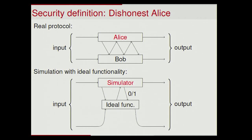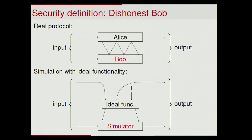Here's what the security definition looks like for a dishonest Alice. In the real protocol, Alice and Bob communicate back and forth, where some of these rounds are actually uses of the classical ideal functionality. We want this to be indistinguishable from the ideal case, where the dishonest Alice is replaced by a simulator that interacts only with the ideal functionality. The ideal functionality first outputs Alice's output and not Bob's, and then Alice can choose whether Bob will get the output or not — and that's all she can do. For a dishonest Bob, the simulator is on the other side and Alice just sends her input, gets her output, and always tells the ideal functionality to deliver Bob's output.